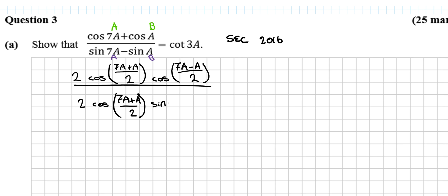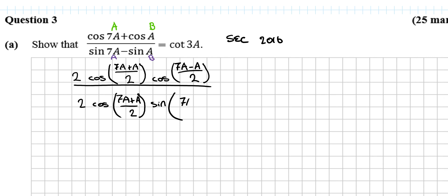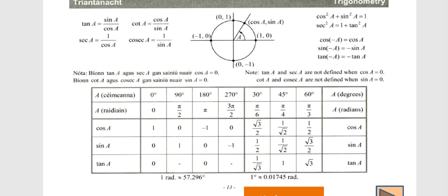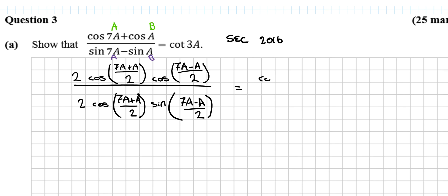So 2 cos a plus b, so it would be 7a plus a over 2. Sine a minus b, so that would be 7a minus a, all over 2, is equal to cot 3a. Well, cot a is defined as cos a over sine a, so cot 3a is cos 3a over sine 3a. That's the first step done.